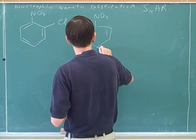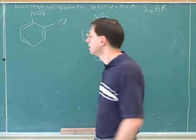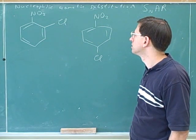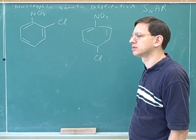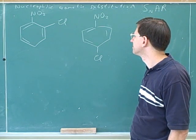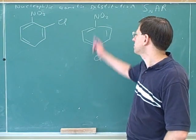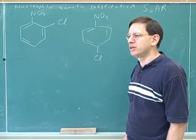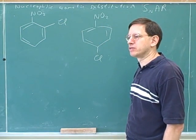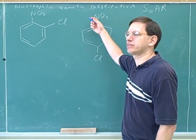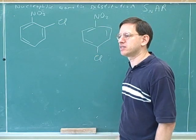So the more electron withdrawing group wins? Like NO2 is more withdrawing than Cl, so if you add a nucleophile, it would go to the para or ortho to NO2? Yeah, basically we're just going to memorize that the nitro group isn't going to act like a leaving group. We haven't seen any reactions where we use a nitro as a leaving group. So the purpose of the nitro group is to activate the ring, and the purpose of the halogen is to be the leaving group.